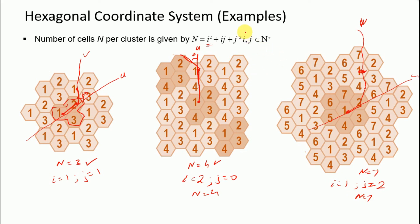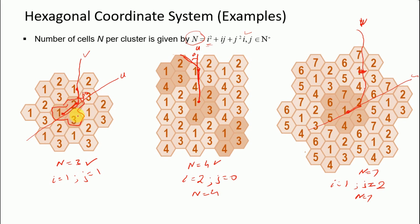The number of cells in a cluster must follow the expression n = i² + ij + j². Valid values include n = 1, 3, 4, 7, 13, and so on — values like 5 or 6 are not valid. The frequency reuse distance for n = 3 is √3·R, for n = 4 it is 2R, and for n = 7 it is √7·R.